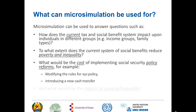What would be the cost of implementing different social security policy reforms? For example, if you wanted to modify the rules of a social benefit, how much would that cost? If you wanted to introduce a new cash transfer, how much would that cost? It would also allow you to model how you might raise those resources through direct and indirect taxes that you are simulating. And of course when you introduce new policies you can look at the impact on poverty and inequality.